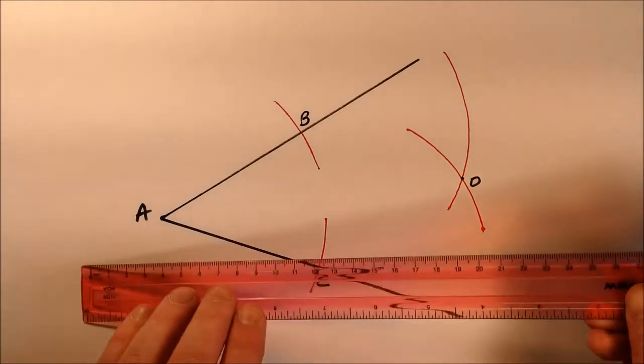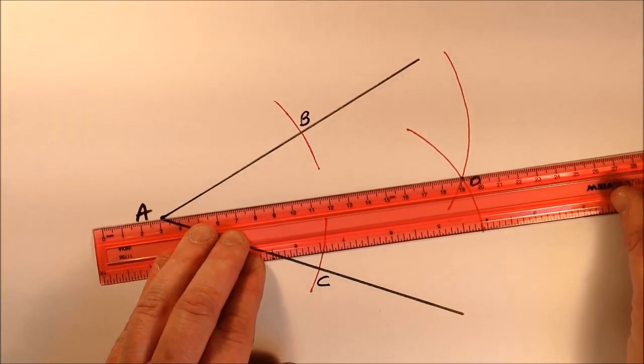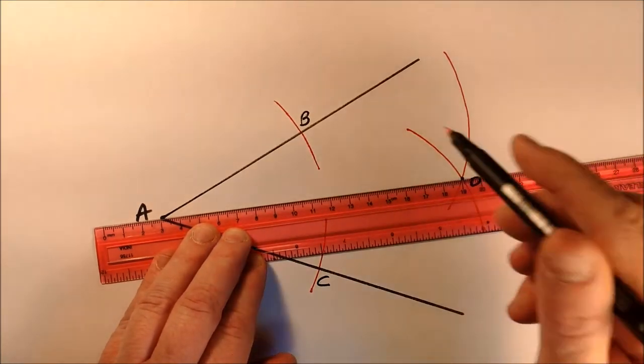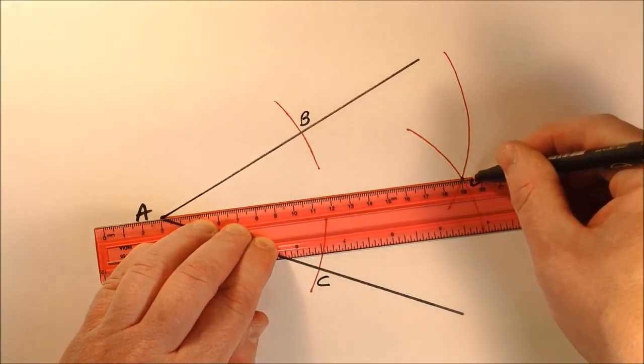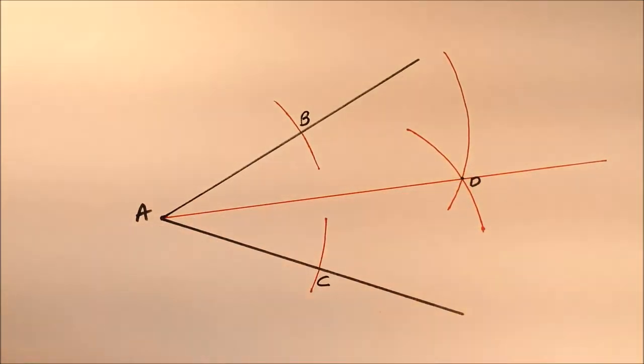With a ruler now, I'm going to draw a line segment from A through D, so I've now bisected the angle.